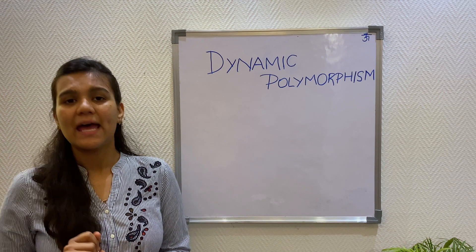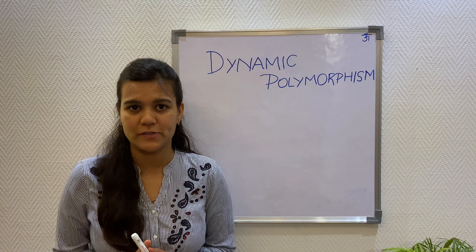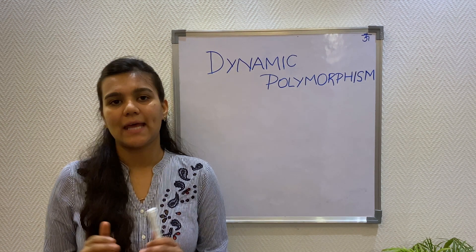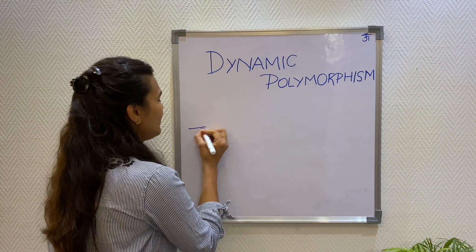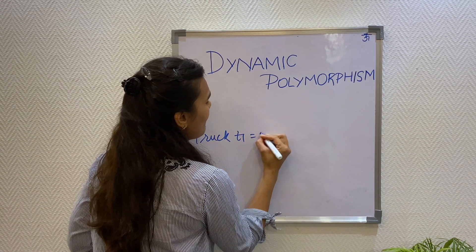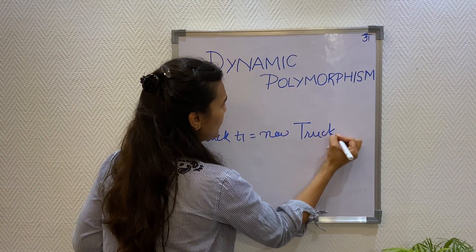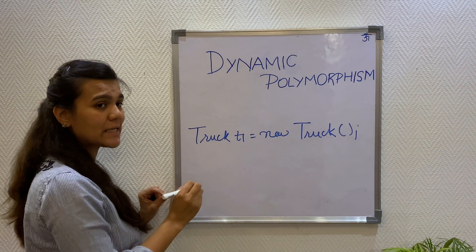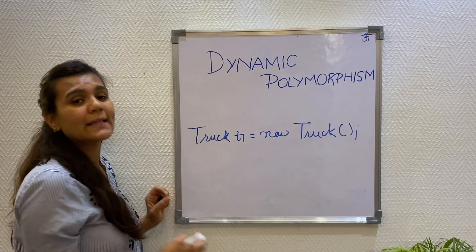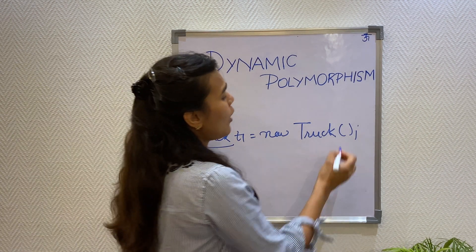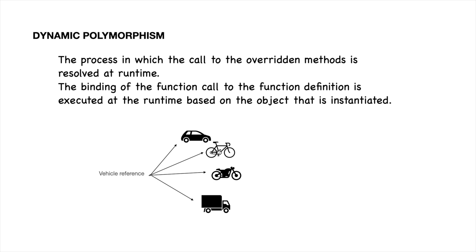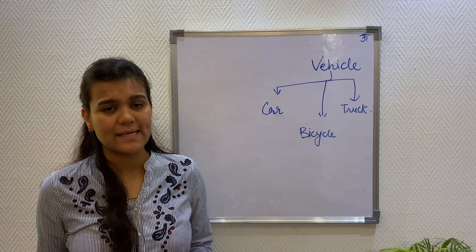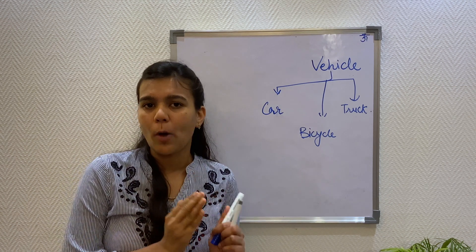Assuming that I have set the base, I will be using it to build over the concepts of dynamic polymorphism. Initially, when I had created the truck class object, I had created it using the same reference and the same object type — meaning the truck reference type and the object also of the truck class. In dynamic polymorphism, the reference and the object type are different. It is the process in which the call to the overridden method is resolved at runtime. But first, we will understand how the object and references are different.